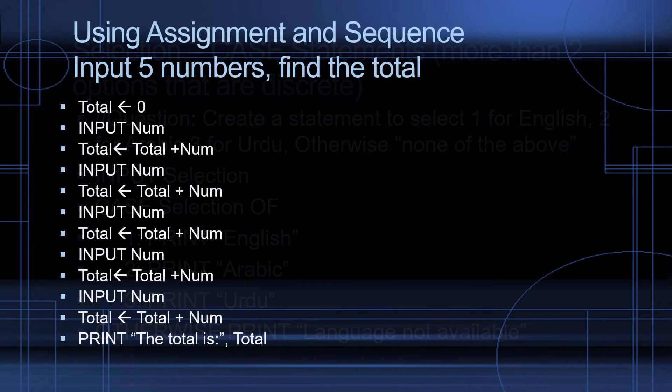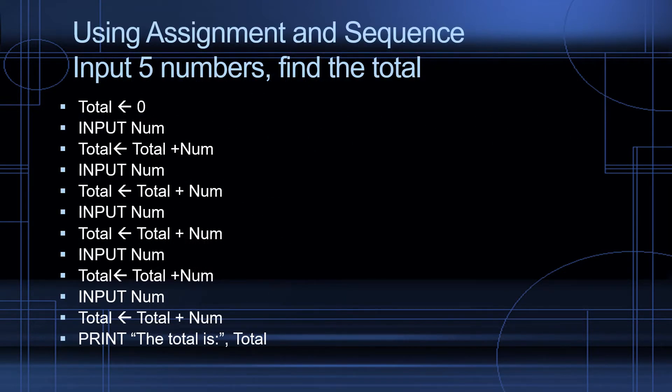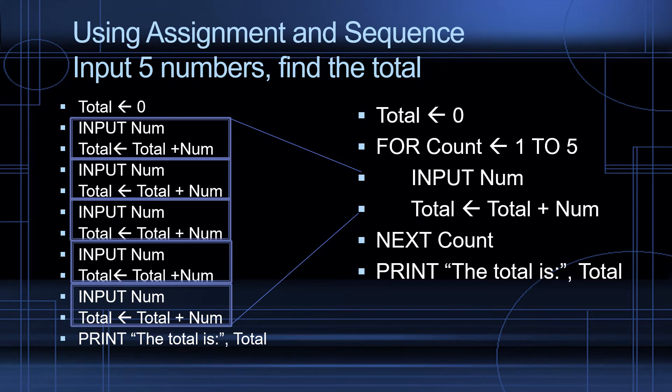Now, here's a program which uses only assignment and sequence to input five numbers and find the total. When we're looking for the total, the first thing we need to do is we initialize a variable, for example, called total, and assign zero to it. This tells the computer, get ready. I'm about to keep adding some data to this variable. Have it ready for me so I can keep it as my running total. After that, we have input num, total equals total plus num. Input num, total equals total plus num. We repeat those two statements five times. And finally, at the end, we print the total.